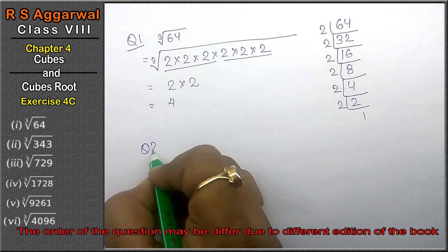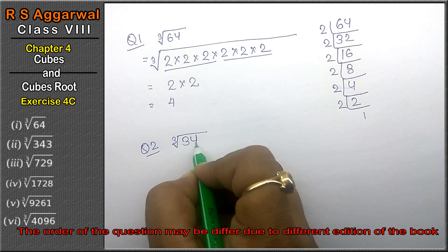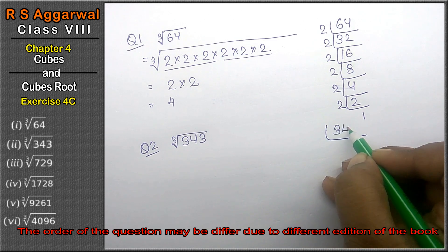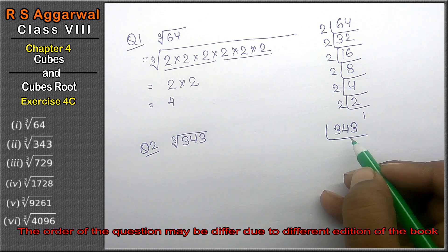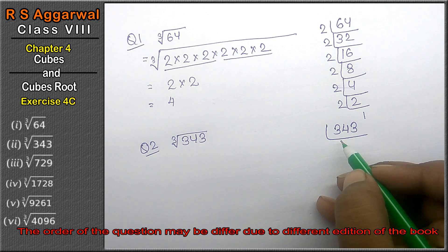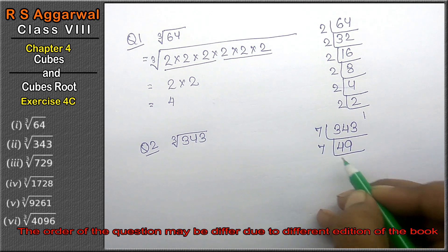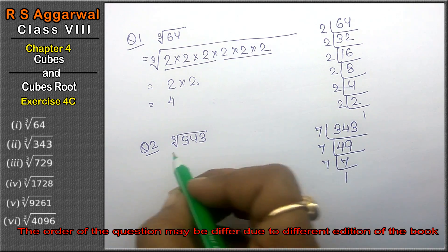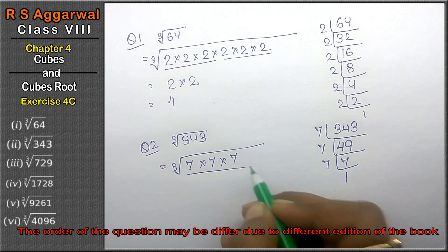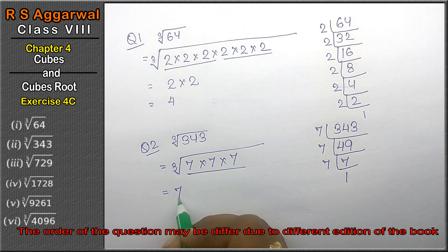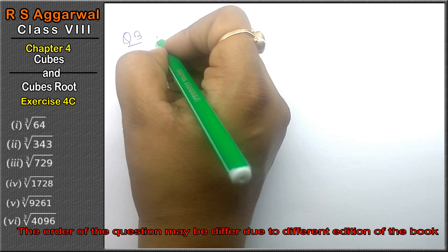Let's do question number 2 of Exercise 4C, that is Cube and Cube Root. Question number 2 is cube root of 343. We check divisibility: 343 is divisible by 7. 7×7=49, 7×49=343. So 343 = 7×7×7, and the cube root of 343 is 7.